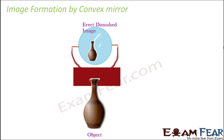Now let us look at image formation by a convex mirror. A convex mirror is a diverging mirror. In this case, we observe that always erect and diminished images are formed irrespective of the location of the object. Even if you keep changing the position of the object — take it to infinity or bring it very close — every time you will see an erect and diminished image. And what kind of image is this? Of course, virtual.